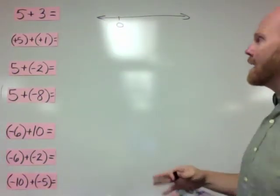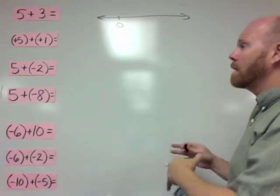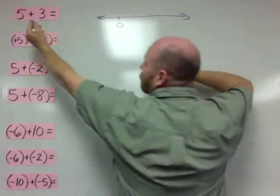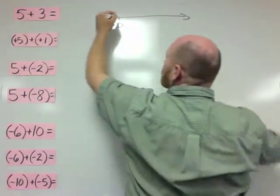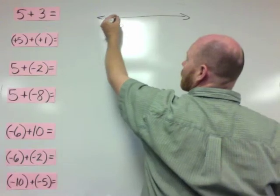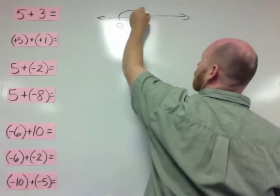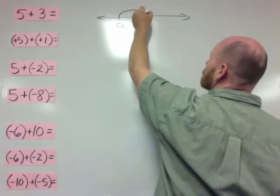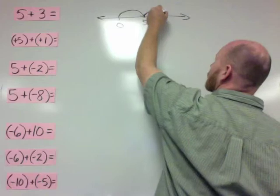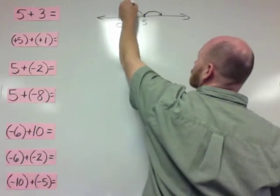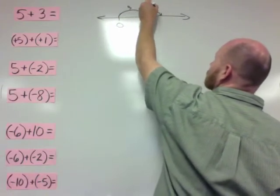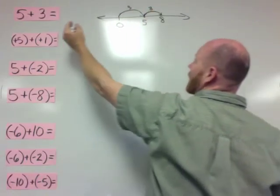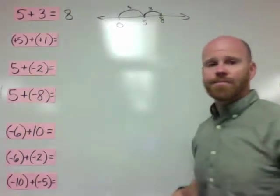When adding a positive number, that means move to the right. So 5 plus 3 means you're starting off at 0, you're going to move to the right 5, and then you're going to move to the right 3. Move to the right 5, move to the right 3, and that puts us at 8. So the answer is 8.